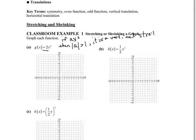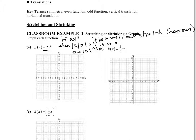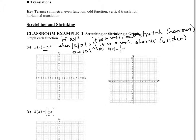A vertical stretch means the graph appears narrower. If the absolute value of a is something between zero and one — a fractional value — then it is a vertical shrink, which means it spreads out wider. So in example a, since the value is 2 and 2 is greater than 1, that tells us we have a vertical stretch of 2.